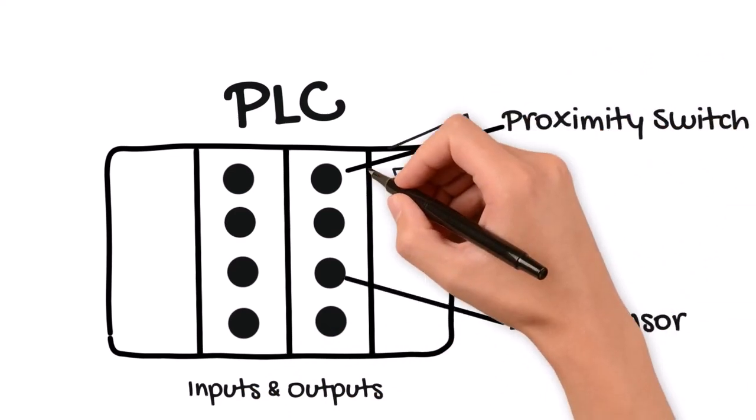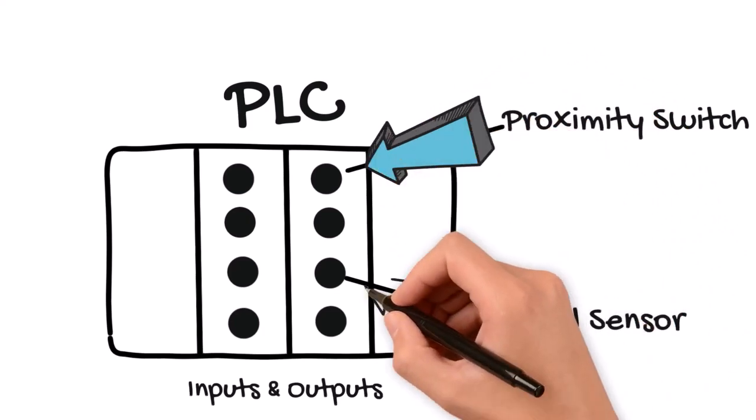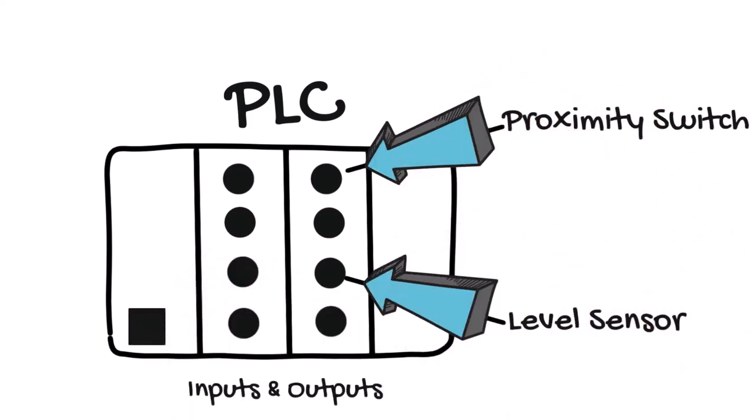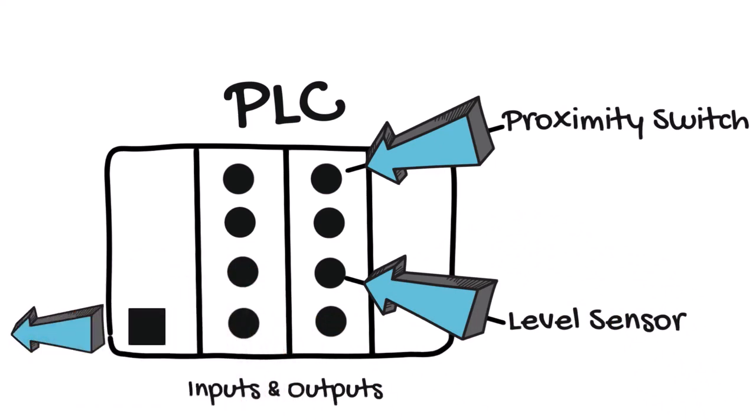The PLC collects data from these sensors and communicates it out to the rest of the system by using a typical Ethernet-based network port connected to a network switch.